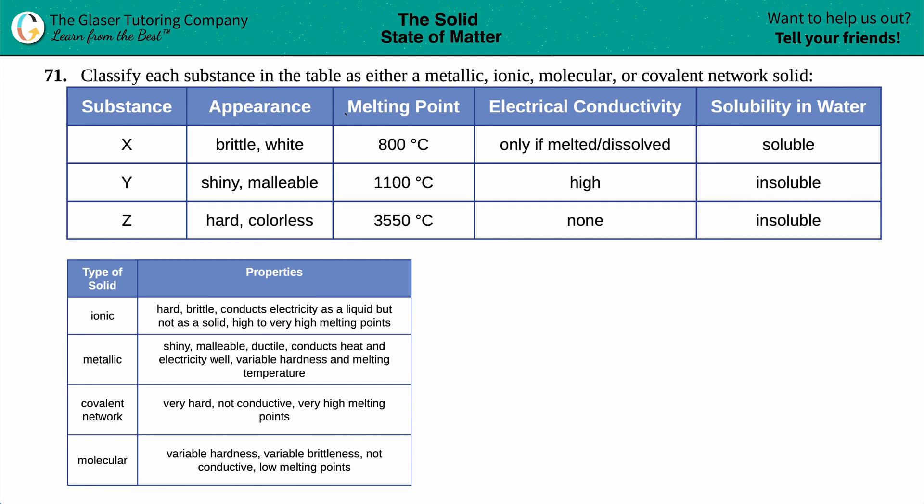Number 71. Classify each substance in the table as either a metallic, ionic, molecular, or covalent network solid - one of the four crystalline solids that will occur when a liquid solidifies into a solid. We have three substances here, X, Y, and Z, and we just have to figure out what each one is. Let's take one substance at a time. Let's figure out what substance X is.